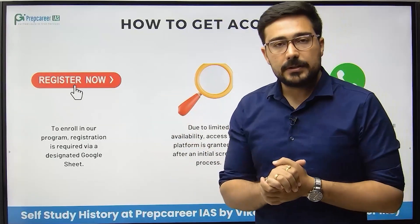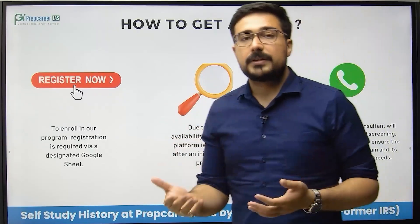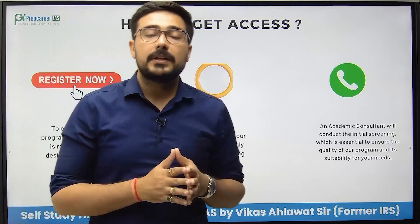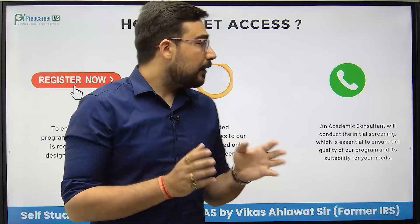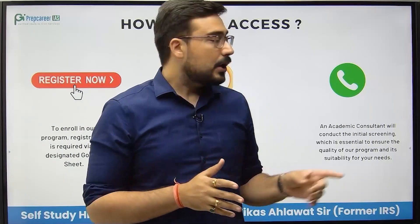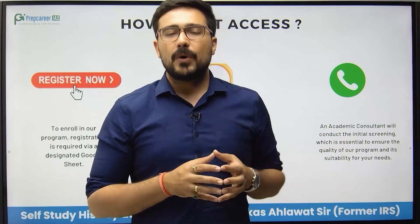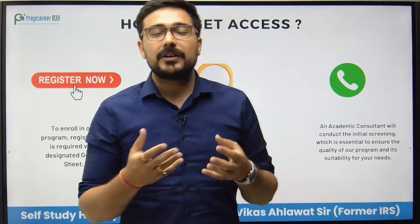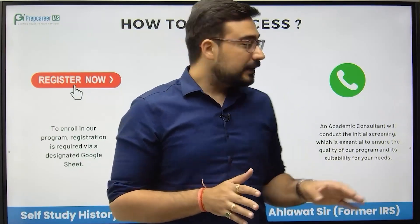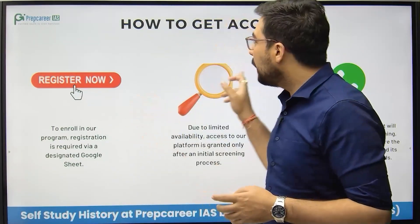You need to register and will get a specific Google Sheet. Everyone has limited slots, so you will get a specific call as part of a screening process. Because the number of students we can help is always limited in nature, an Academy Counselor will call you, understand your requirements — whether you are a college student in first, second, or third year, or have already prepared for some time without getting the desired result — and on the basis of this screening you will get the benefit of this program.